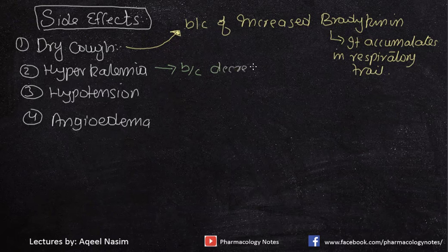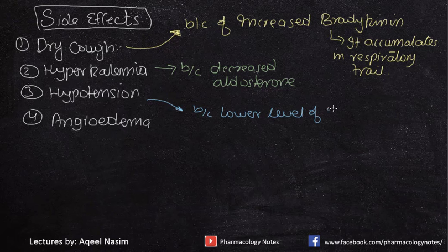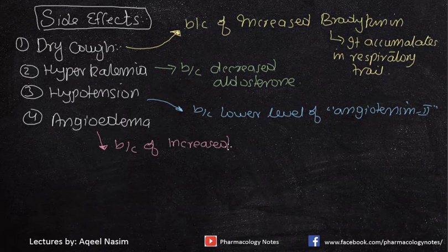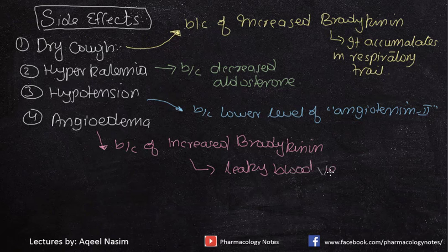Hyperkalemia occurs because of decreased aldosterone secretion. Hypotension is associated with lower levels of angiotensin 2, which is a potent vasoconstrictor. Angioedema is caused by leaky blood vessels — bradykinin causes vasodilation via nitric oxide, leading to leaky blood vessels and thus angioedema.